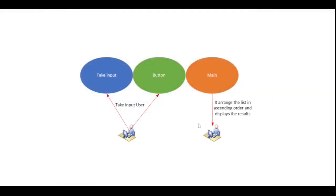To make the whole program simple, we divide the program into three sprites: Take Input, Button, and Main. Take Input and Button take the input from the user, while the Button sends a trigger to the Main script, which starts arranging them in ascending and descending order and also displays the result.